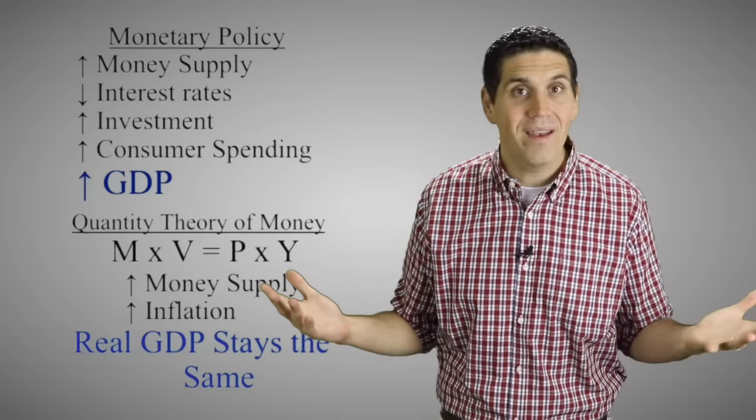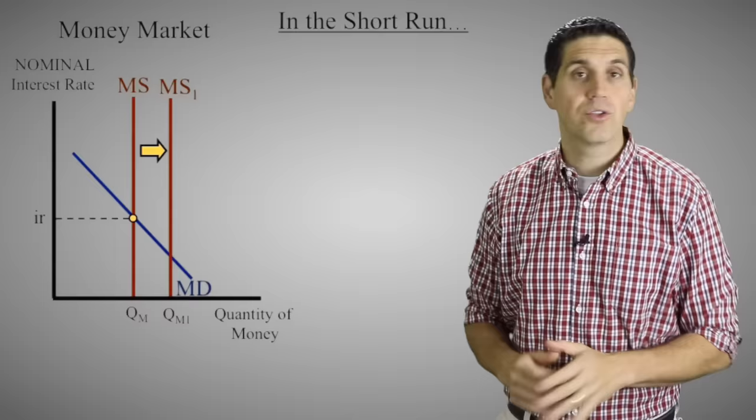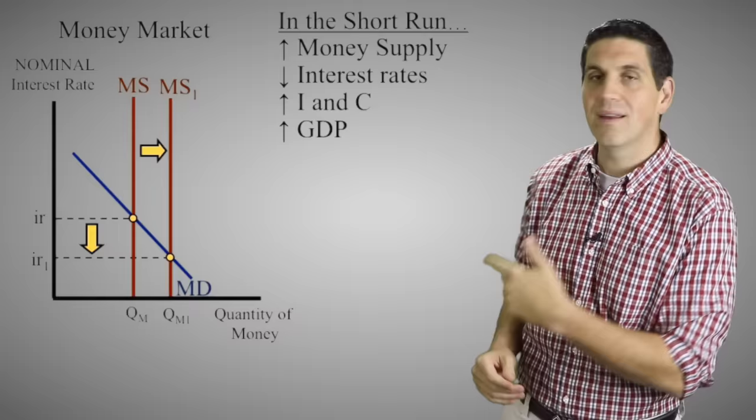They can both coexist. In the short run, an increase in the money supply that causes a decrease in nominal interest rates can lead to more GDP before inflation — and maybe more importantly, expected inflation — sets in. But in the long run, more inflation causes everything to go back to where it was. An increase in the money supply will lower the nominal interest rate, increase investment and consumer spending, and increase aggregate demand and GDP. That's standard monetary policy in the short run.